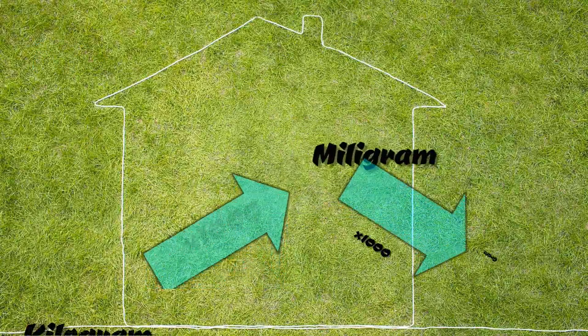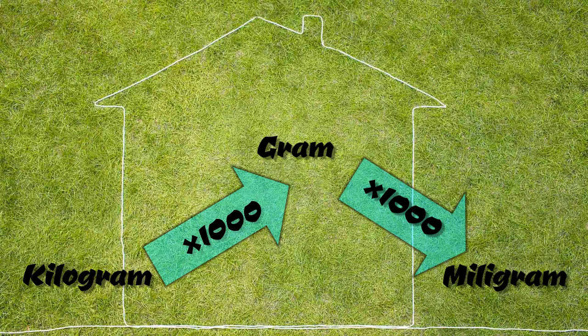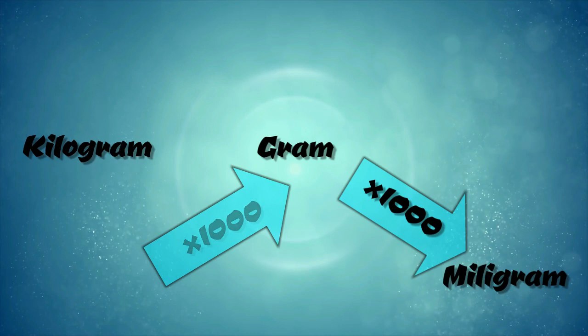To convert between these units, from kilogram to gram multiply by 1000, from gram to milligram multiply by 1000 as well.